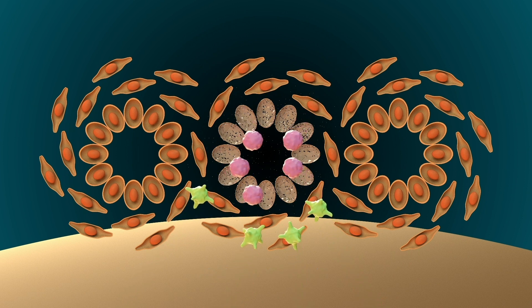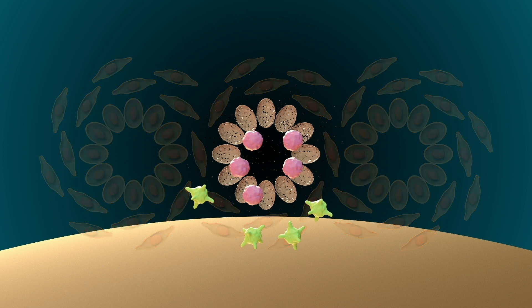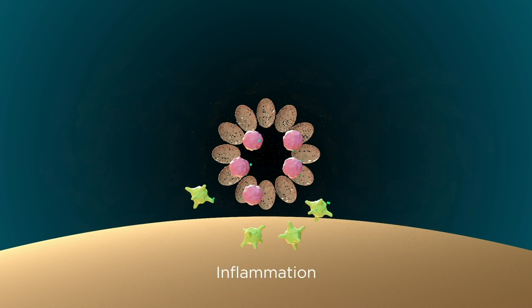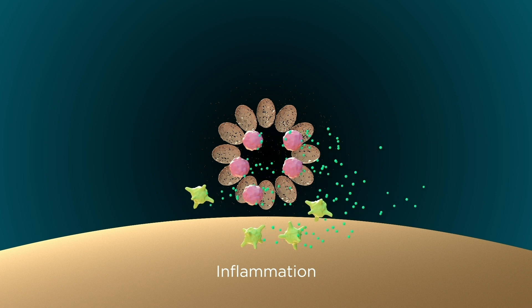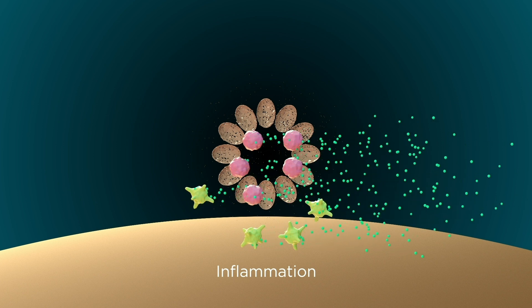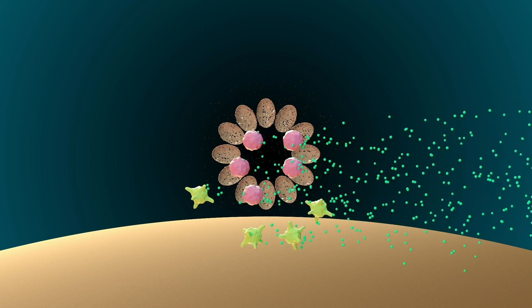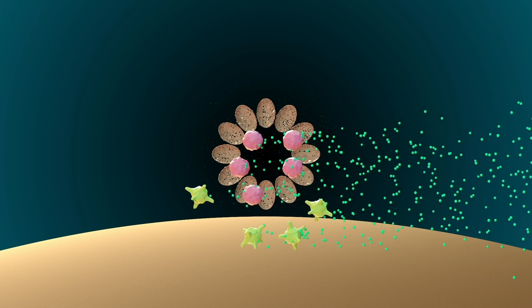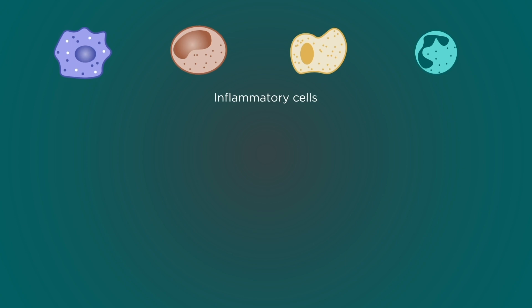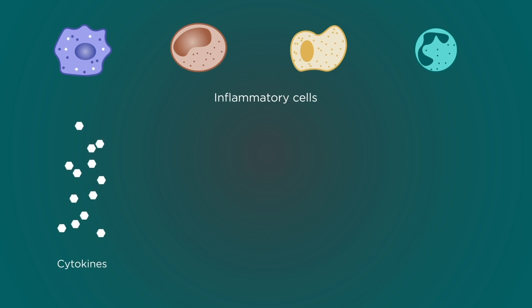Unlike the healthy endometrial tissue which leaves the body during menstruation, cells that die in endometriotic lesions trigger an inflammatory response. Macrophages and other activated inflammatory cells secrete pro-inflammatory cytokines,